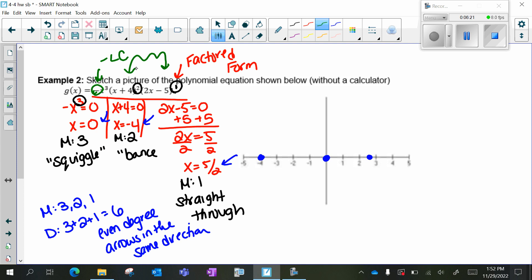So at x = -4, it's going to bounce. At zero, it's going to squiggle and cross over. And then it's going to go straight through.